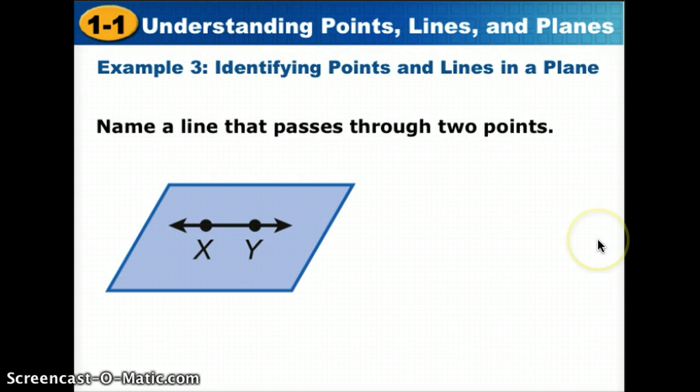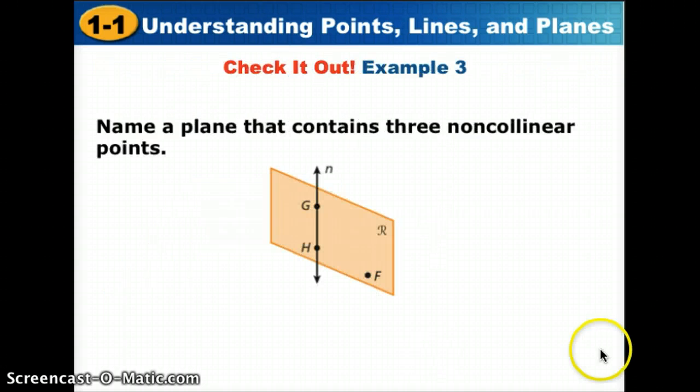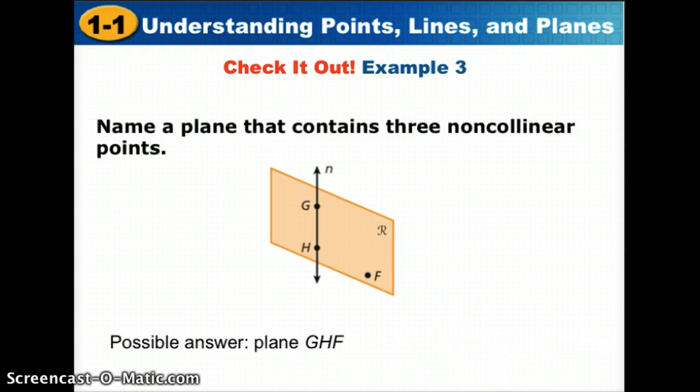Now let's look at some examples. If we wanted to name a line that passes through two points, even though you see numerous things in the picture, the line is XY. In our next example, we are trying to name a plane that contains three non-collinear points. Remember, non-collinear means not on the same line. Since two points will always be on the same line, the third makes the set non-collinear. Those three points are all inside plane R. So to name that plane, we can either call it plane R or we can name it by the points in the plane.